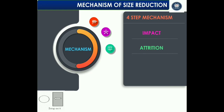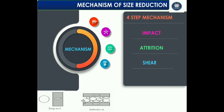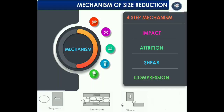Attrition arises from particles scraping against one another or against a rigid surface. Shear is produced when a particle is compressed between the edges of two hard surfaces moving tangentially. Compression is the disintegration of particles by two rigid forces. Compression force is used when the material is hard, abrasive, and non-sticky, when the material will break cubically, and where the finished product is to be relatively coarse in size.